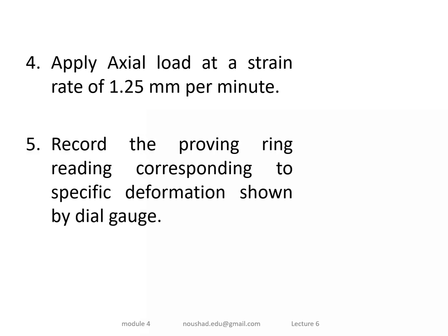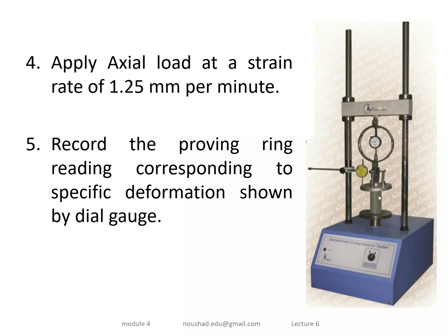The axle load is applied at a rate of 1.25 mm per minute. The deformations are recorded using a dial gauge. We record both the load reading from the proving ring and the corresponding deflection from the dial gauge at regular intervals throughout the test.